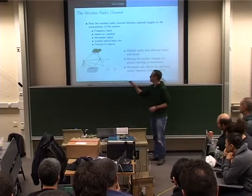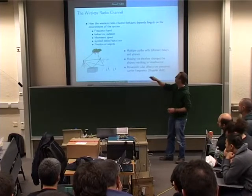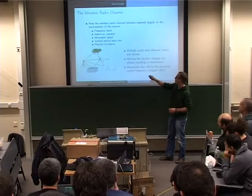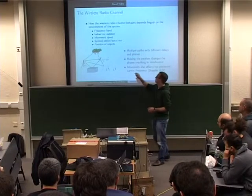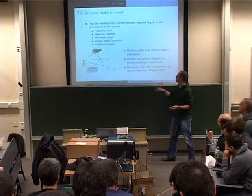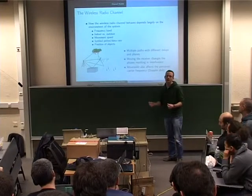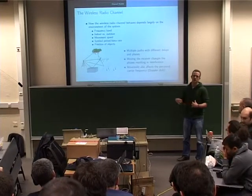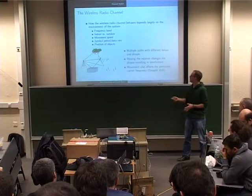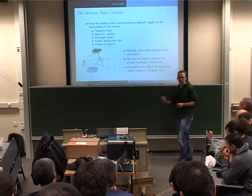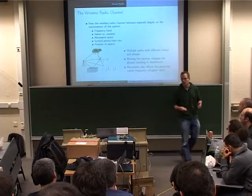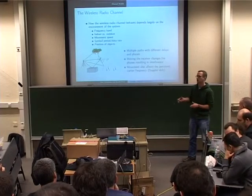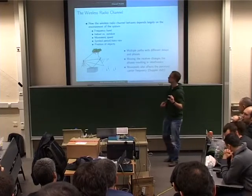In a simple scenario, you have a base station and a cell phone. There's a line-of-sight path, but you also have multiple paths rescattered by buildings or other objects. All those paths have different delays because they travel different lengths, and they also have different phases — so they can add up constructively or create destructive interference depending on phase. Moving the receiver also changes this — just like the double-slit experiment from high school, with maxima and minima. Moving also affects the perceived carrier frequency at the receiver; you also suffer from Doppler shift.